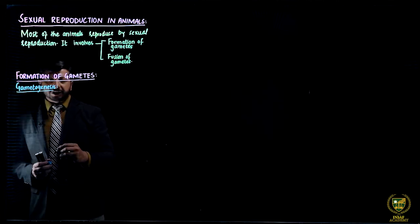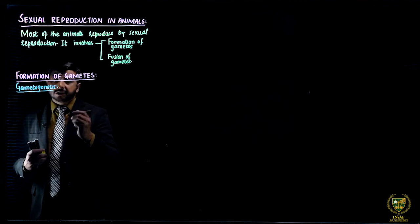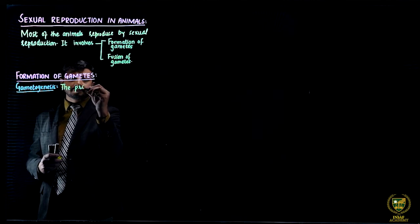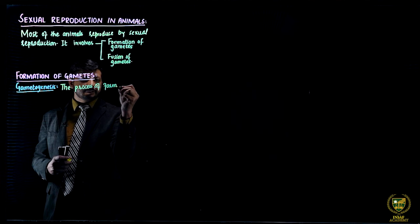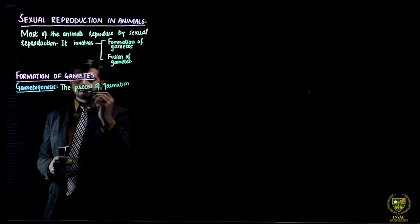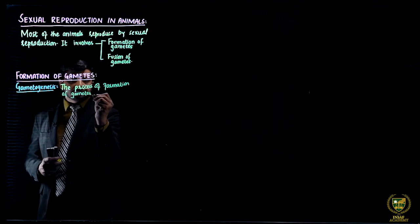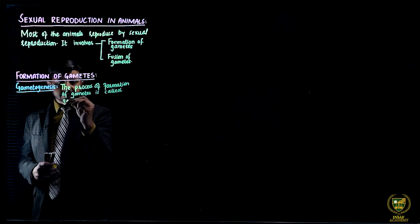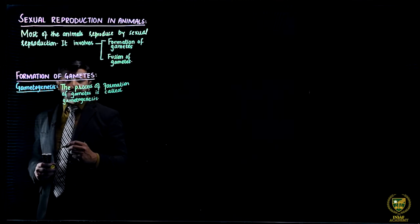The first step of sexual reproduction in animals is the formation of gametes. So let's get into that. This is the formation of gametes. For the formation of gametes, gametogenesis.